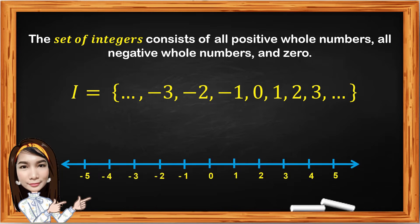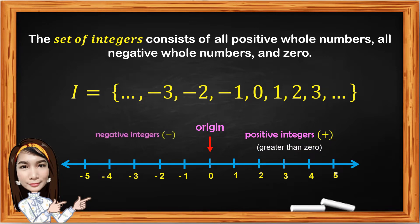Another way of showing the set of integers is using a reference point on a number line. Zero is the origin. Numbers to the right of zero are positive, therefore they are greater than zero. Numbers to the left of zero are negative, therefore they are less than zero.